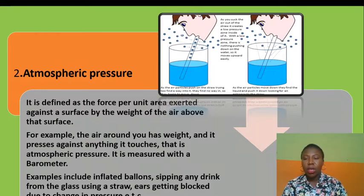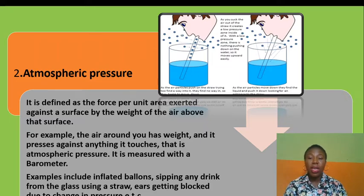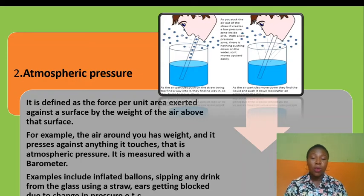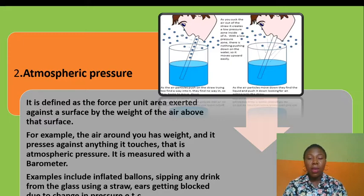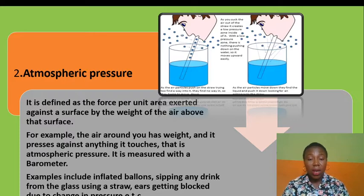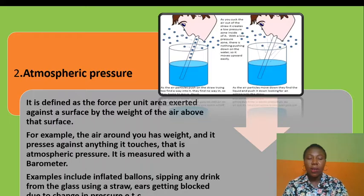Atmospheric pressure is defined as the force per unit area exerted against a surface by the weight of the air above it. The air around you has weight and it presses against anything it touches — that is atmospheric pressure. It is measured using a barometer. Examples include inflating a balloon and sipping a drink from a glass using a straw, as shown in the diagram. Also, when our ears get blocked, it is due to changing pressure.